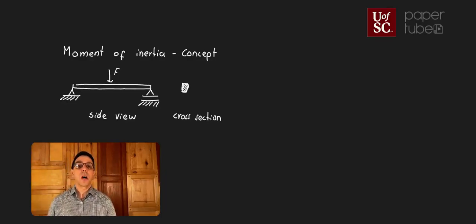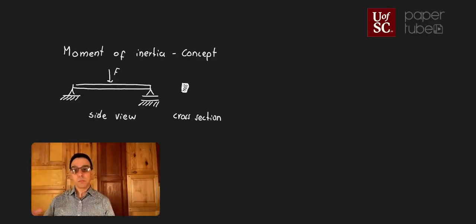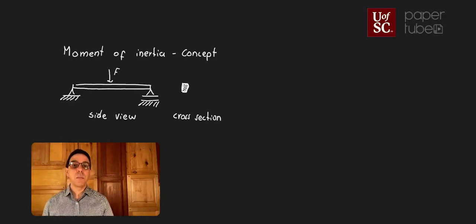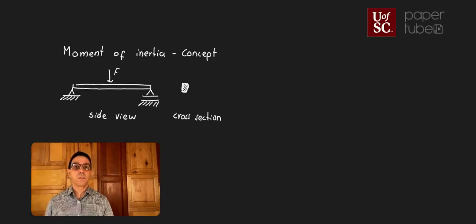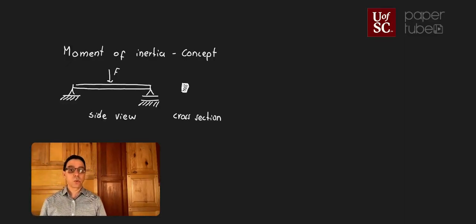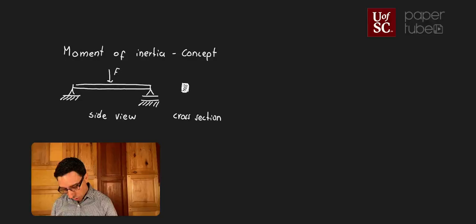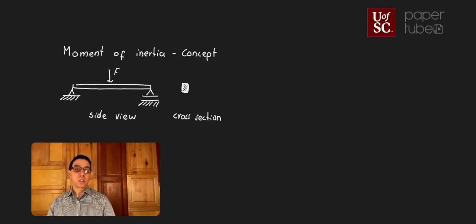This is going to be important because when you look at the design of a structure — particularly long elements like beams or columns — the resistance to external moments is going to be a function of several things: the type of material, the length of that element, the load of course, and also the shape of the cross section. So the shape of the cross section is going to be very, very important. We're talking about the cross section, not the side view of the beam.